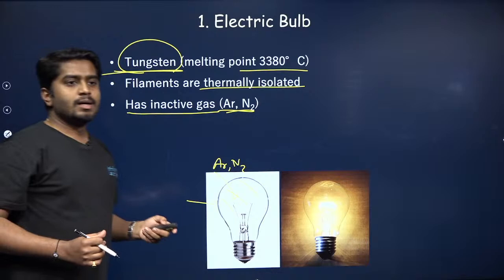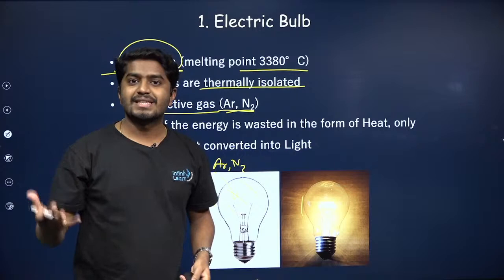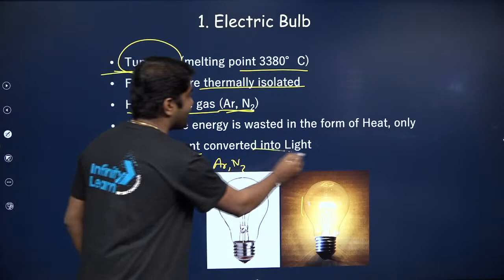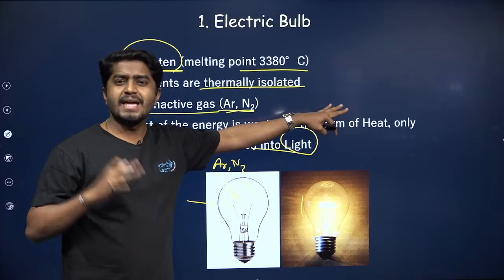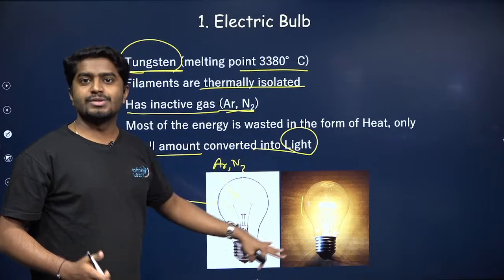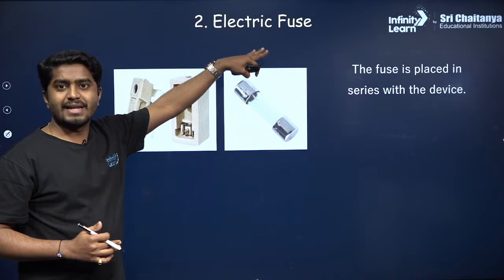Inactive gases like argon and nitrogen are used inside the bulb because if there were oxygen, the tungsten would react with it. The inactive gases do not react with the tungsten filament, prolonging its life. However, most of the energy is wasted as heat — only a small amount is converted to light. That's why nowadays we prefer LED bulbs.